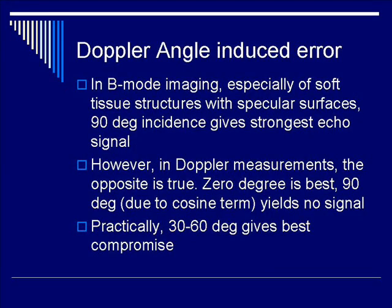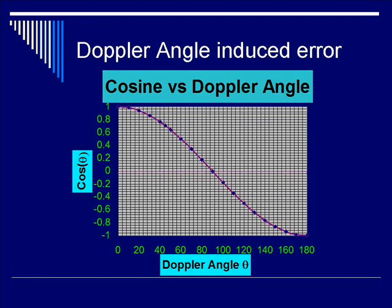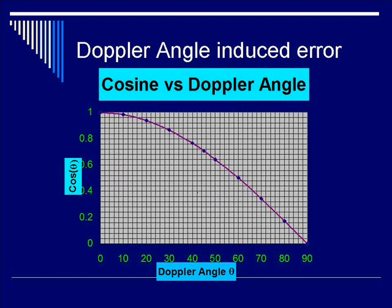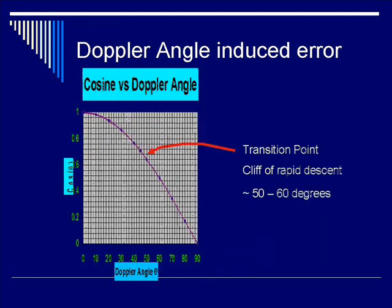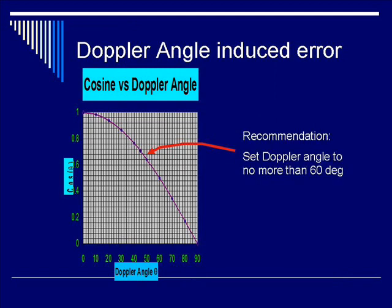Unlike B-mode imaging, in which 90 degrees gives you the best signal strength, in Doppler measurement if you measure at 90 degrees you'll get zero signal due to the cosine term. Therefore, for the best compromise, 30 to 60 degrees is best. The cosine angle curve shows a steep drop-off in signal when you approach the 50-degree angle mark, so for practical purposes you want to measure at no more than 60 degrees.